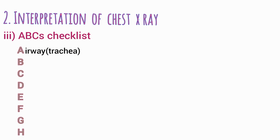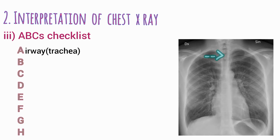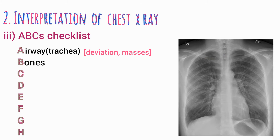In the A2H checklist, A is for airway — specifically the trachea, which is normally located centrally. Look for evidence of deviation and any masses in this area. If normal, move on to B, which is for bones.